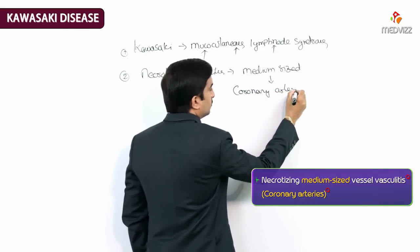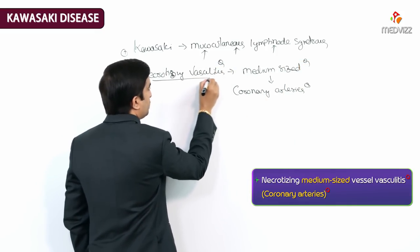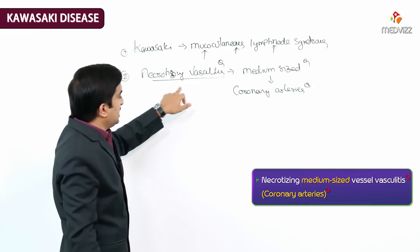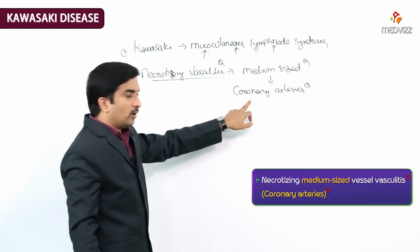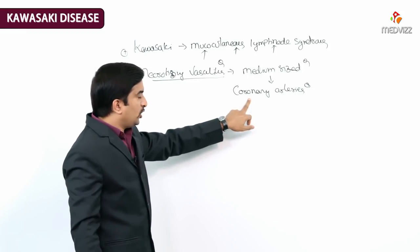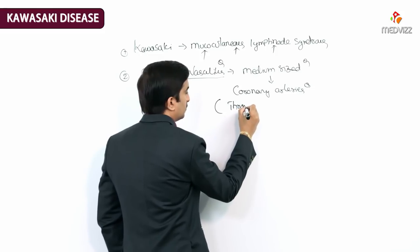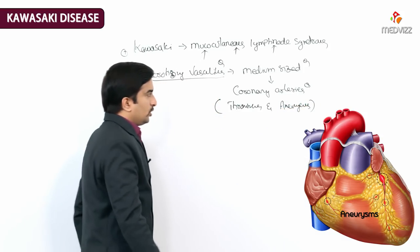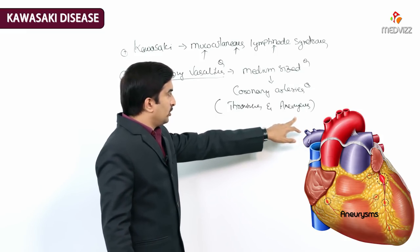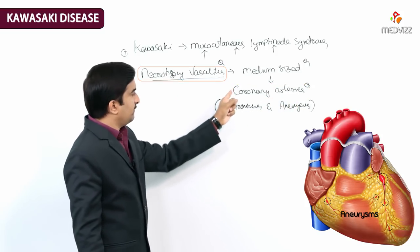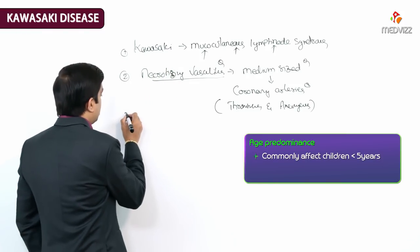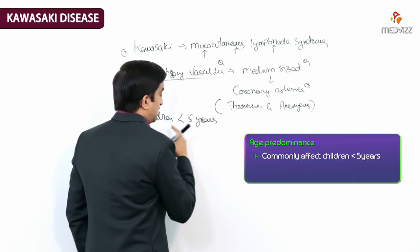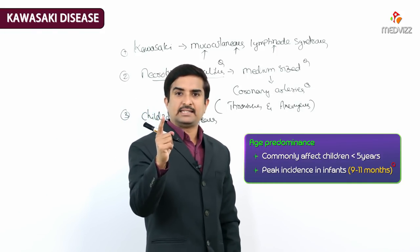It more commonly affects the coronary arteries. Because of the involvement of the coronary arteries, coronary artery thrombosis as well as aneurysms may be seen as complications of the necrotizing vasculitis. It is more commonly seen in children less than five years of age.